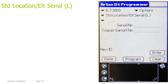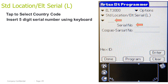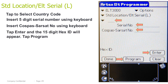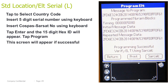Standard location, ELT serial long. Tap to select country code. Insert 5-digit serial number using the keyboard. Insert Cospas-Sarsat number using the keyboard. Tap Enter and the 15-digit hex ID will appear. Tap Program. This screen will appear if successful.